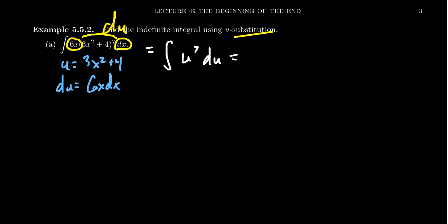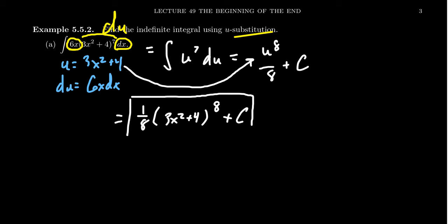By the anti-power rule we raise the power to the 8th, divide by 8, add an arbitrary constant, and then substitute in the original value of u in terms of x. We end up with 1/8 times 3x squared plus 4 raised to the 8th power plus a constant. This gives us our anti-derivative. If we want to check if we have the correct anti-derivative, take the derivative of this thing. I encourage you to pause this video to check it yourself, but we were able to find this anti-derivative using u-substitution.